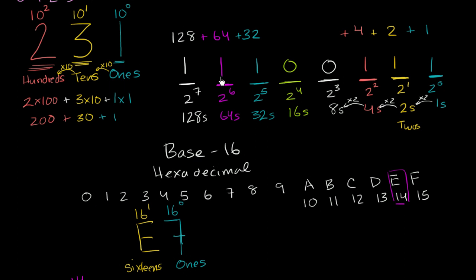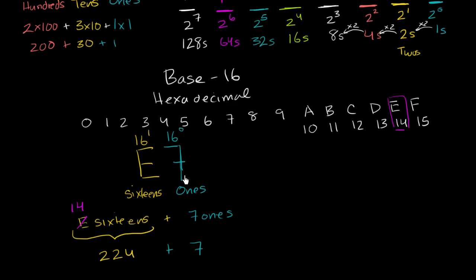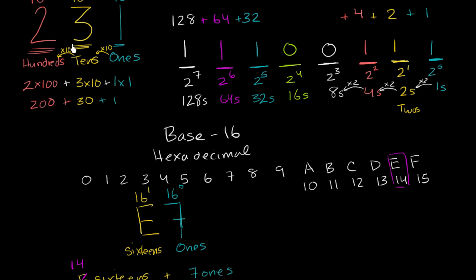Any number you can represent in decimal, you can also represent in binary, hexadecimal, base three, base 60, base 31 — whatever you want. You might notice a pattern: the more symbols that we have — in base 16 you have 16 symbols — the fewer place values you need to represent the same quantity. Each place contains more information.